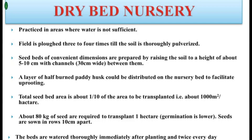Seeds are sown in rows 10 cm apart. Immediately after sowing, the nursery beds are watered, and thereafter watered twice every day. Transplanting of seedlings is done between 15 to 21 days after germination — when the seedlings attain that age, they are ready for transplanting.